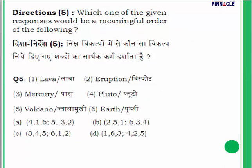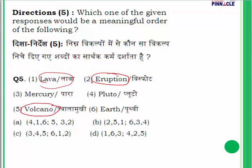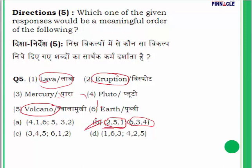Question number 5: which would be a meaningful order of the following — Lava, Eruption, Mercury, Pluto, Volcano, and Earth? Select related things: Lava, Eruption, and Volcano are related to each other. Mercury, Pluto, and Earth are all planets. So items 2, 5, 1 form one group and 6, 3, 4 form another. Option B is the correct answer.